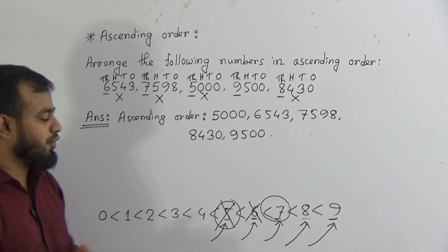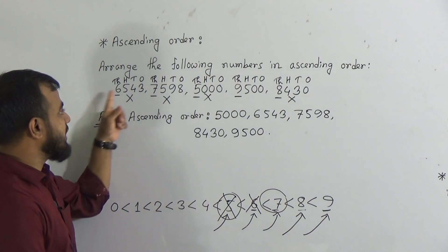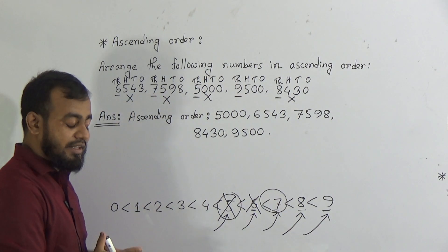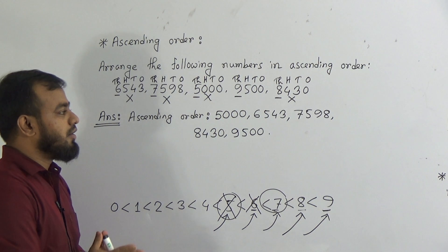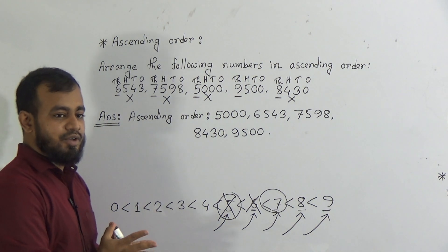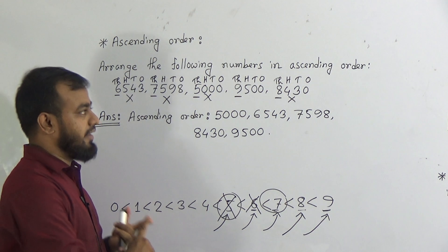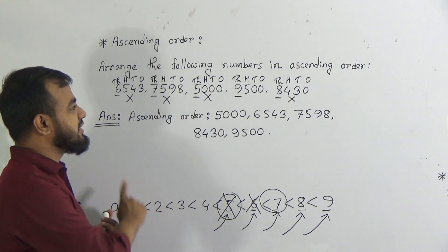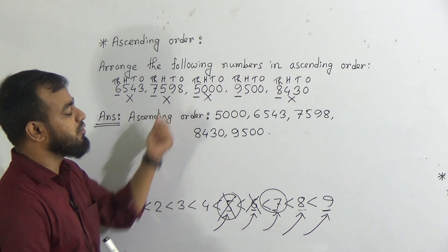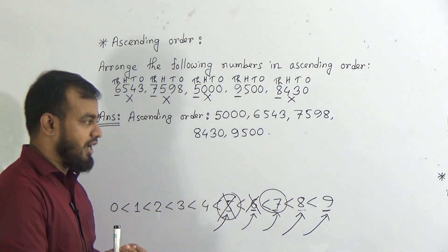So first of all, we need to identify the place values of all the numbers. Then we should identify which place value is the highest in those numbers. That highest place value's digit will be marked, and whichever digit is smallest — that number will be our smallest number.